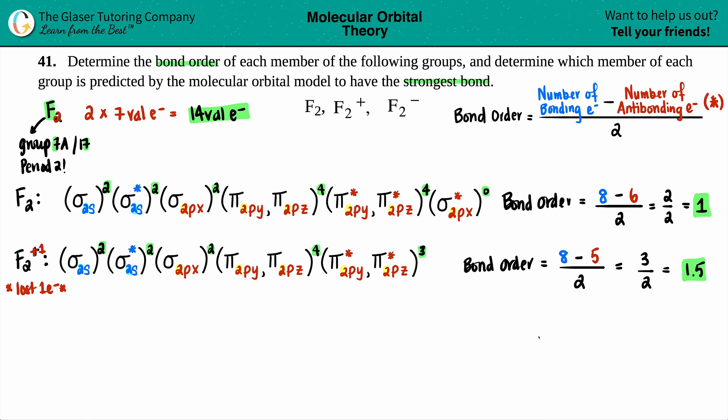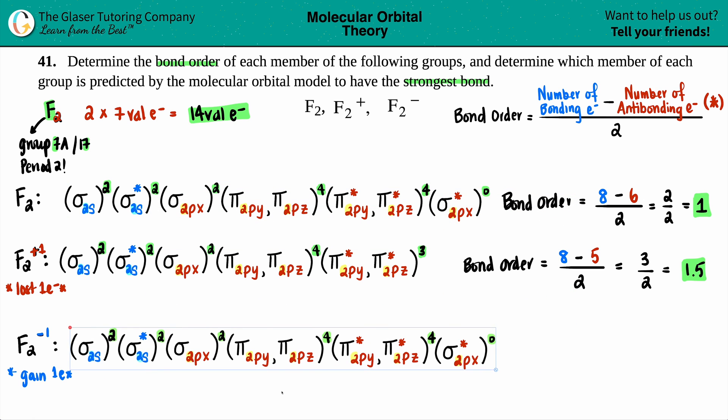And now we just have to do the last one, which is F2 minus. Well, this is now the reverse. A negative, which is a negative 1, means that you gained 1 electron from your neutral compound. So I'm going to take this, copy, and paste it on in. And now I'm going to add 1 electron. I can't add it here because this is max of 4. So this 0 now turns into a 1. How easy is that, right?